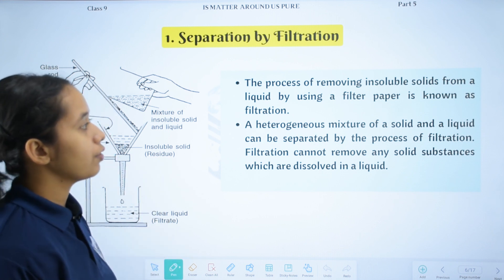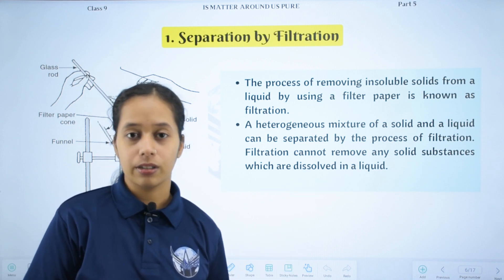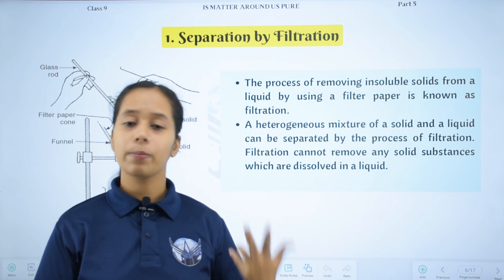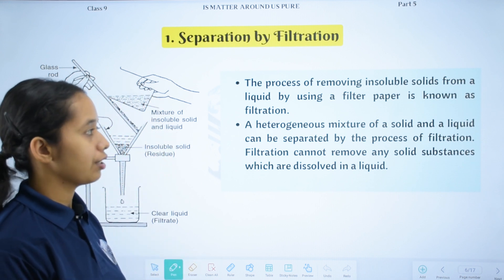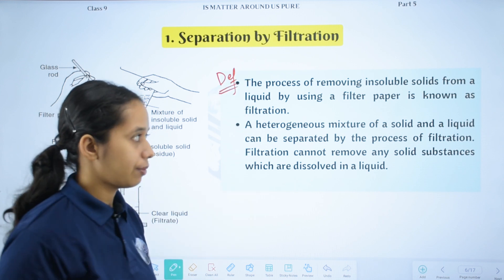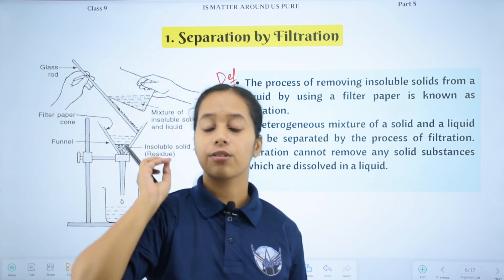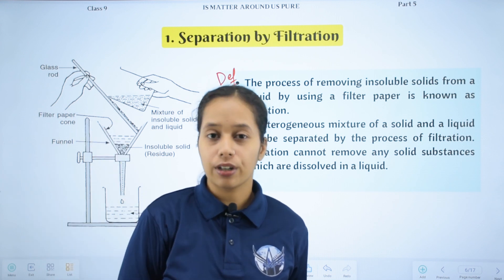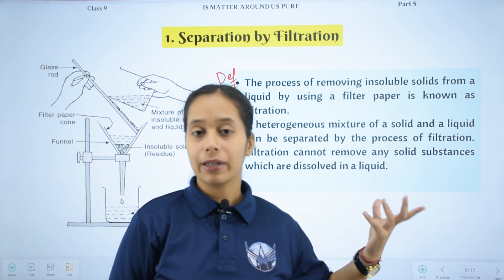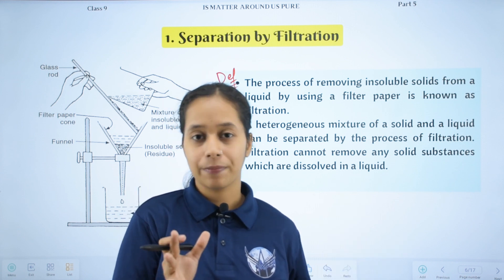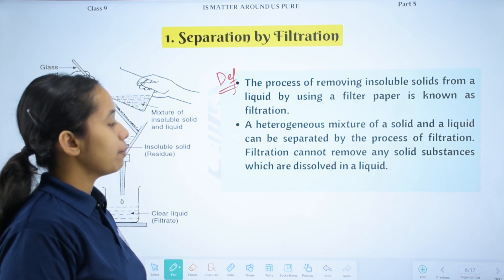The process of removing insoluble solids - solids that are not getting dissolved, not soluble - from a liquid by using a filter paper is known as filtration. A special filter paper is used. The mixture is passed through the filter paper. We get a residue - mostly the solid particles - and we get a filtrate, which is the liquid part. A heterogeneous mixture of a solid and a liquid can be separated by the process of filtration.